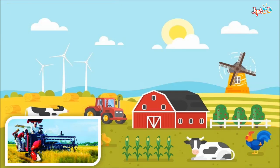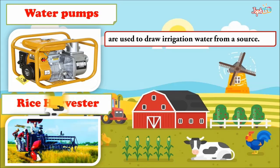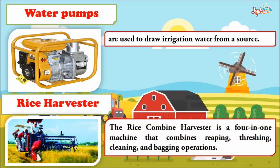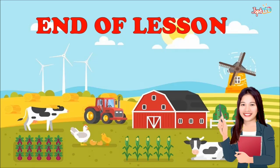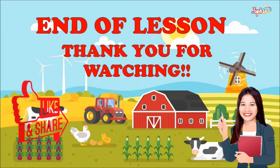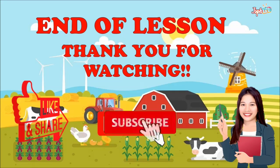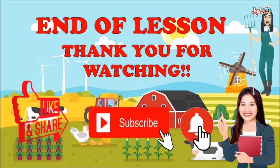Water pumps are used to draw irrigation water from a source. The rice combined harvester is a four-in-one machine that combines reaping, threshing, cleaning, and bagging operations. That's the end of our lesson one on used farm tools and equipment. For more video lessons, don't forget to like, share, subscribe, and hit the bell button. Thank you for watching.